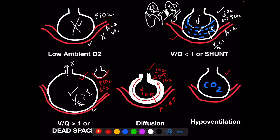Hypoventilation is the fifth cause: nothing is wrong with the alveoli or capillaries. Causes include sedatives, obesity hypoventilation, and altered mental status. A lot of CO2 has diffused into the alveoli but isn't being cleared. So CO2 is increased, oxygen is decreased, and the A-a gradient is normal. Give them one breath every six seconds — ten breaths per minute — and CO2 comes out fast and oxygen normalizes.